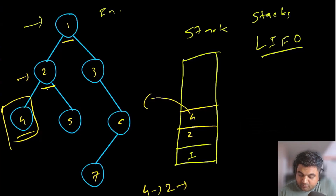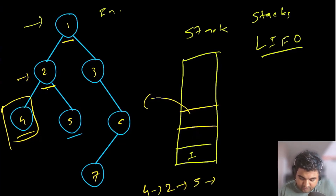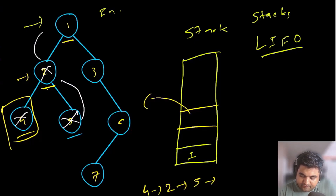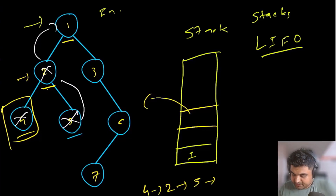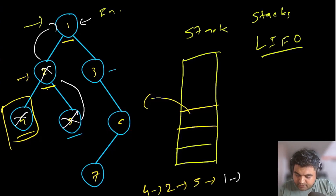Then for node two, we haven't taken care of node number five. So after popping nodes four and two, we push node number five. Node five does not have any more children, so we pop node five next. After popping node five we backtrack — we've taken care of all three nodes under node two. Now we are at node number one. We pop node number one out since we are doing in-order traversal. But node one still has a right child we haven't taken care of, so we push node number three.